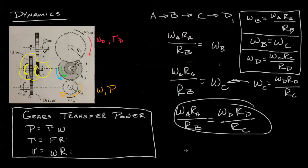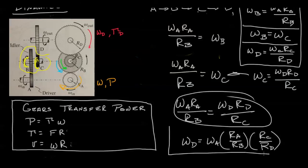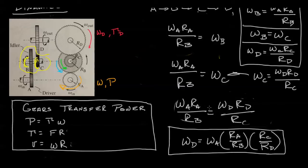And if we wanted to write this out, we'd simply have omega D equals omega A Ra over RB RC over RD. And here is our final equation. Let's tidy this up a little bit. And that's how we work with gear trains.